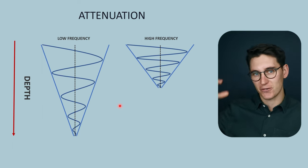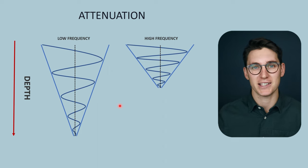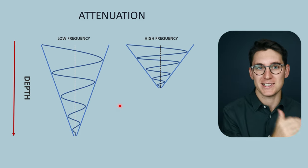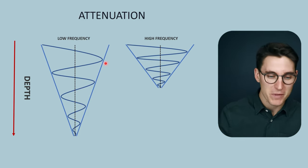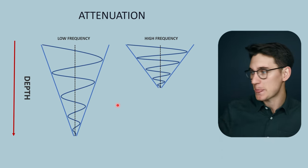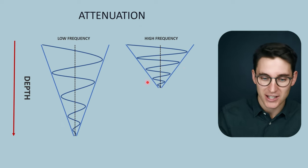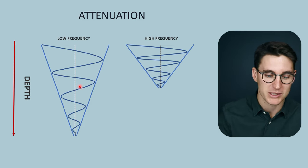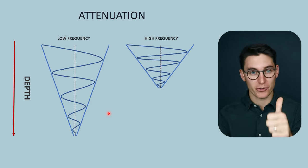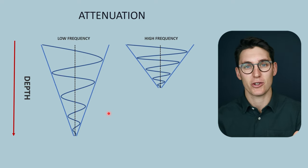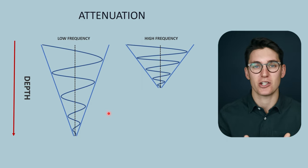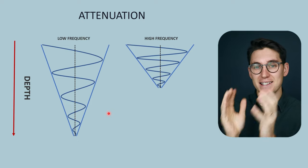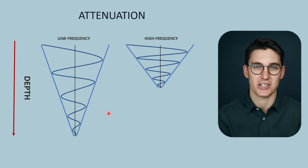Another way to think about this: if your neighbors are having a party, what sound do you hear through the walls? You hear that low bass — the low frequency sounds. That's because low frequency sounds aren't attenuated as quickly; they travel through the walls and aren't attenuated as much as high frequency sounds. So we can't hear the lyrics, but we can hear the bass. Attenuation is therefore dependent on the frequency of our incident wave, the depth it's traveling through, and the tissue it is going through. Tissues attenuate ultrasound beams differently and have a specific attenuation coefficient.